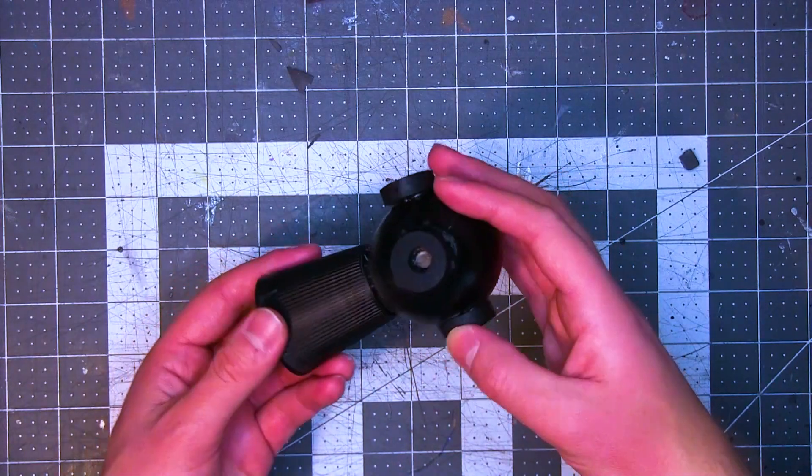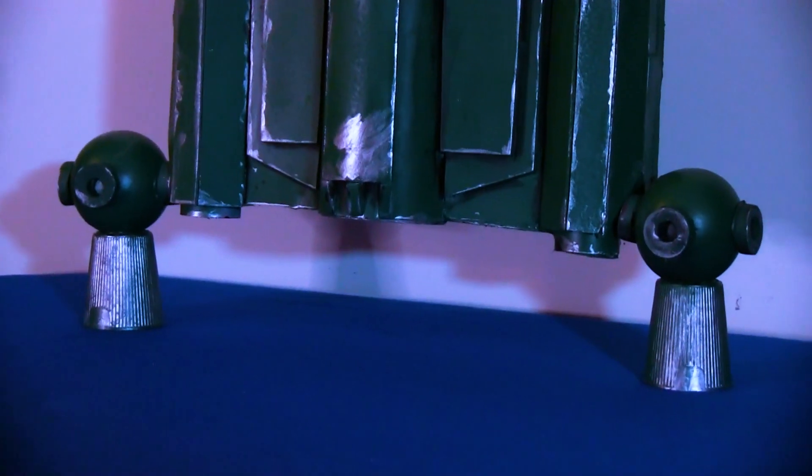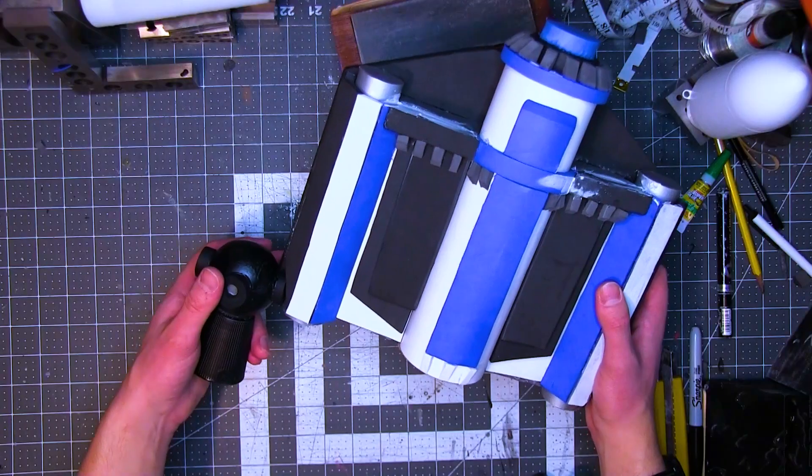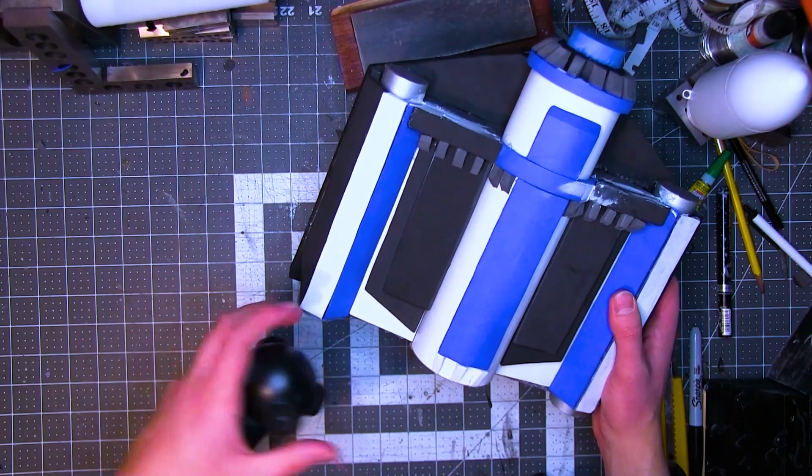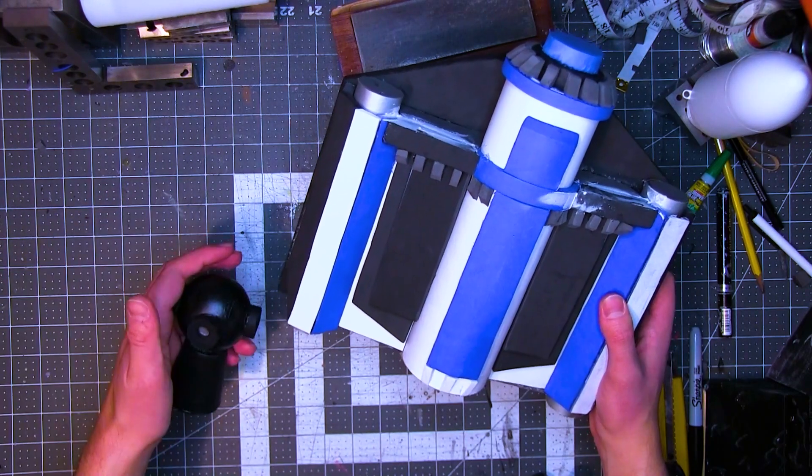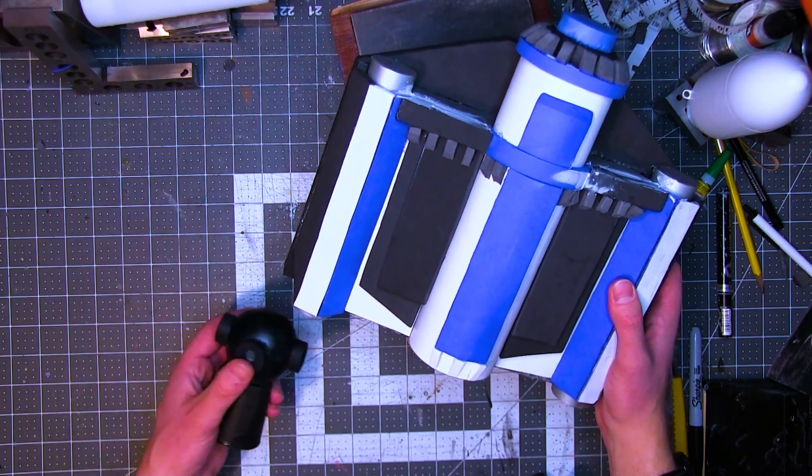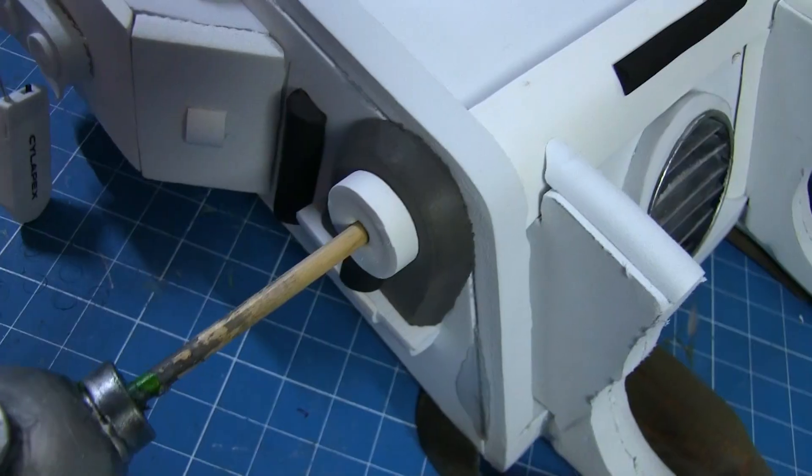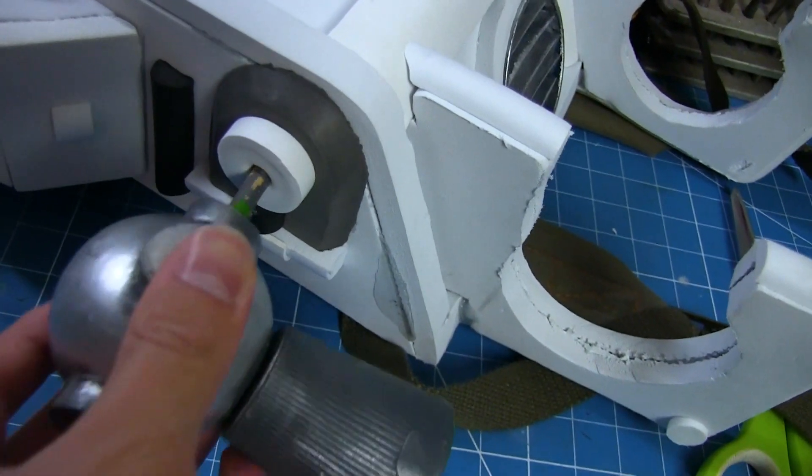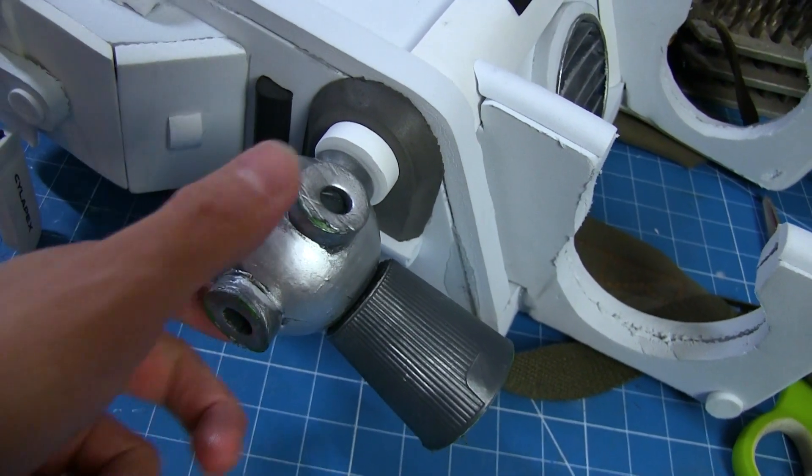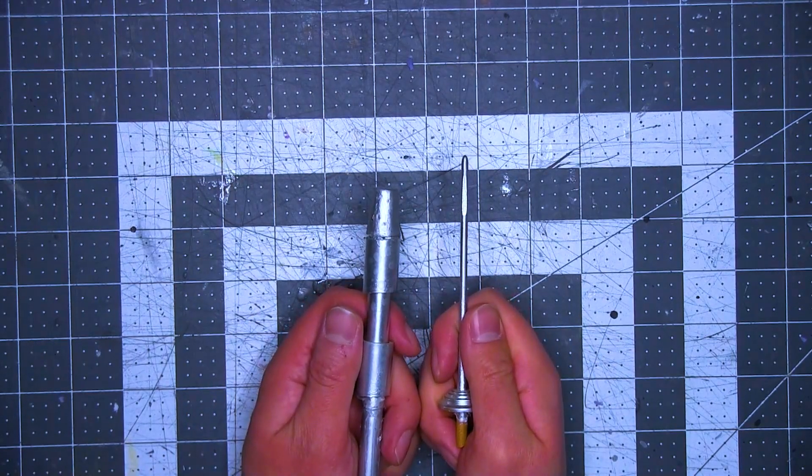So Boba Fett's jetpack has them on the side, which makes sense if it's like a real jetpack, because you want the engine bell as far away from the person as possible. These are among the few parts that I actually painted. I did a black base coat and a top coat of rub and buff. The other painted parts were the antennas. Again, identical to Mandalorian antennas. Those were actually painted with silver spray paint.